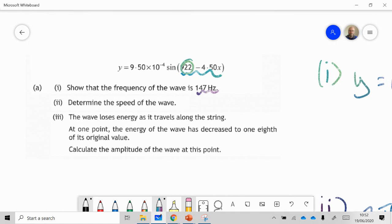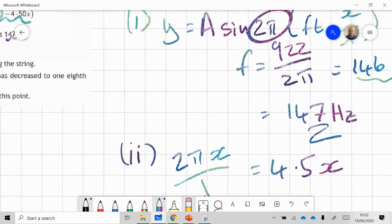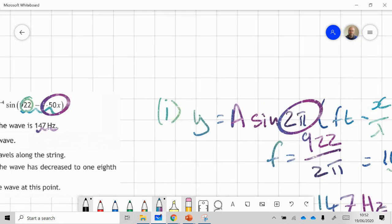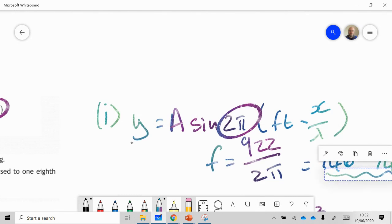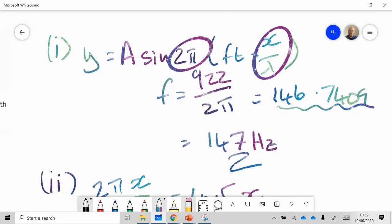The next step is to determine the speed of the wave. Let's go back to the equation. We have to look at this part here. In our traveling wave equation, this is equal to x/λ, so we've got to use this part here: x/λ.